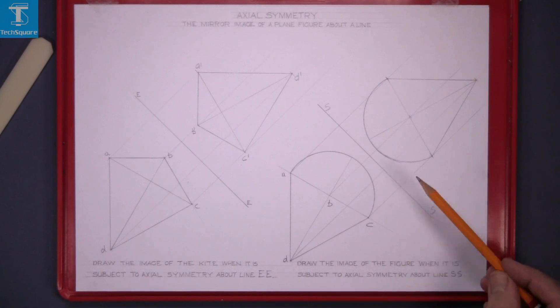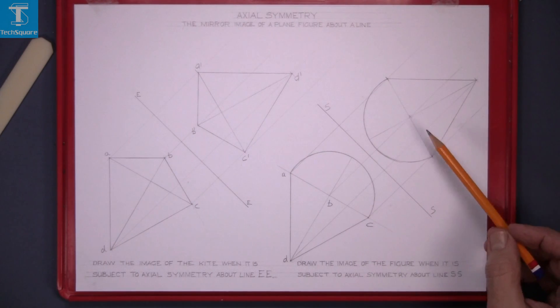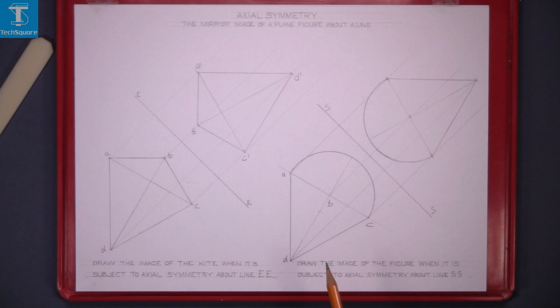And that's the image of the plane figure under axial symmetry about line SS.